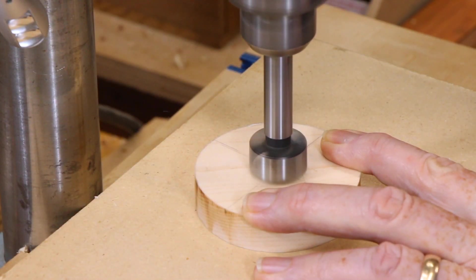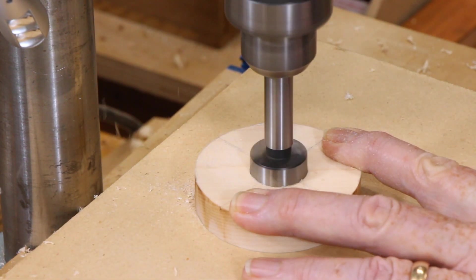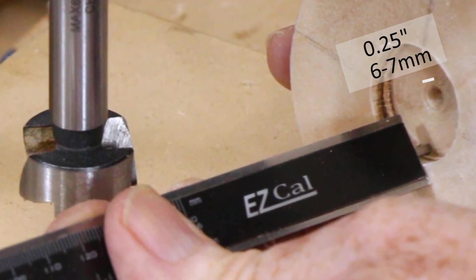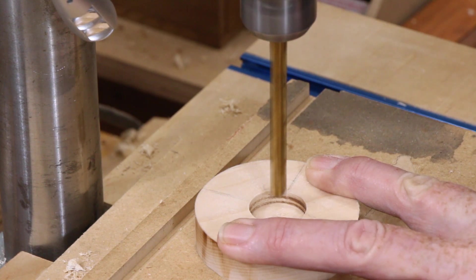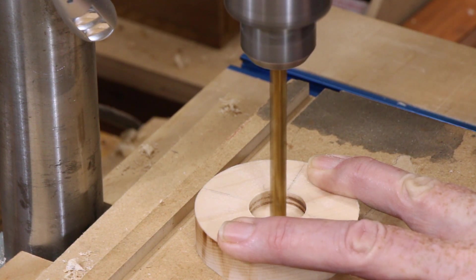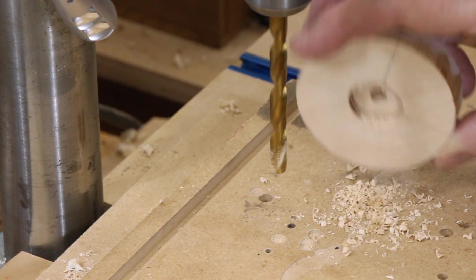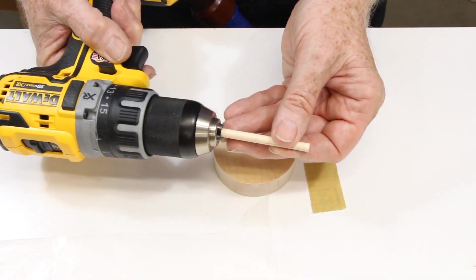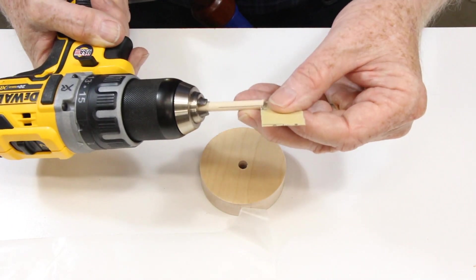Next, I bored holes in the round base. The large Forstner recess just needs to be deep enough to accommodate a nut and washer. I drilled the central hole slightly smaller than 8 millimeters or 5/16ths, so it would be a very snug fit on my threaded rod, which is often slightly undersize. I then sanded the hole until it fit perfectly. This only takes a few seconds.